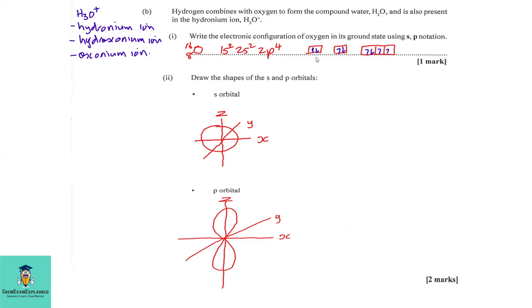And the same thing in the box notation, we go 1s² 2s² and then 2p⁴. But you will fill them with this one first, this second, this one third, and this one is the fourth electron added.